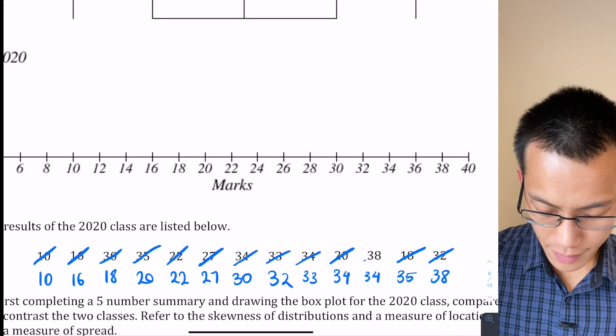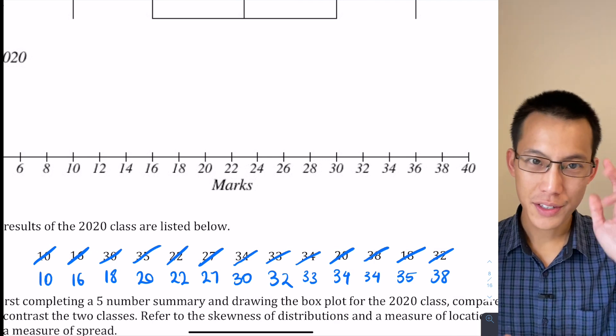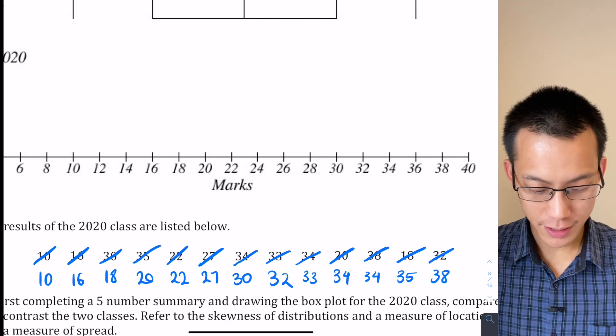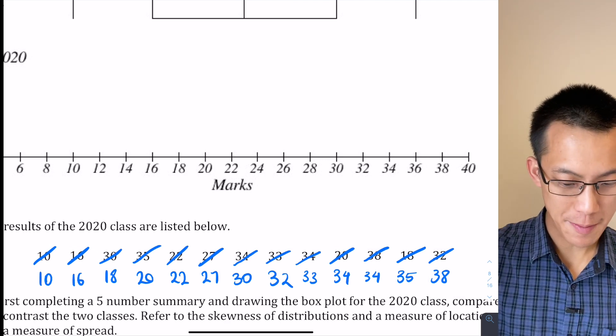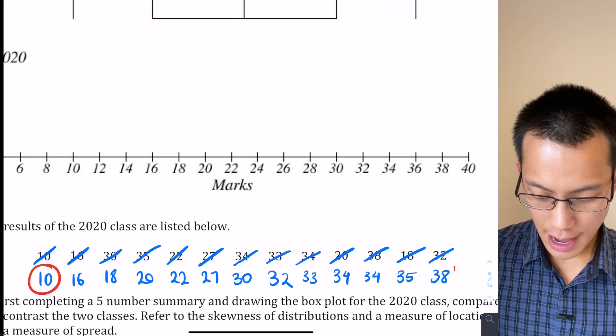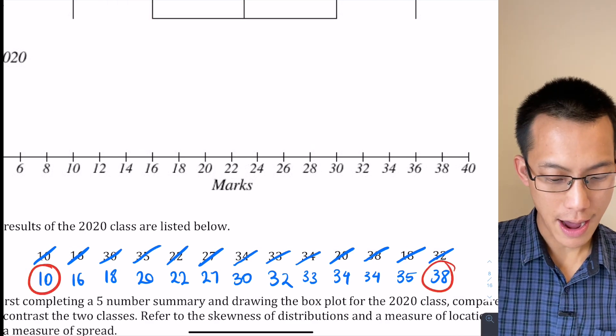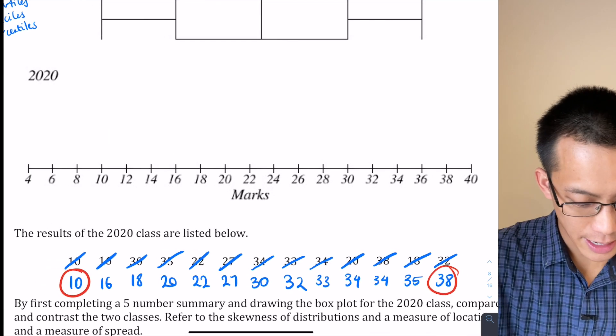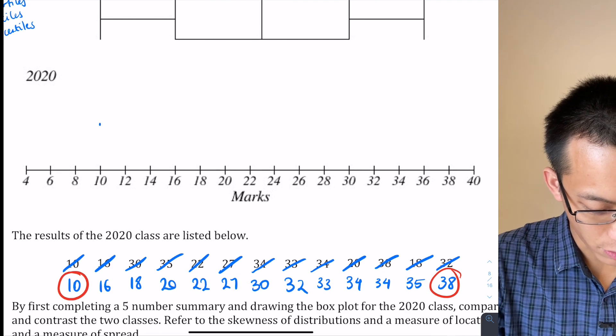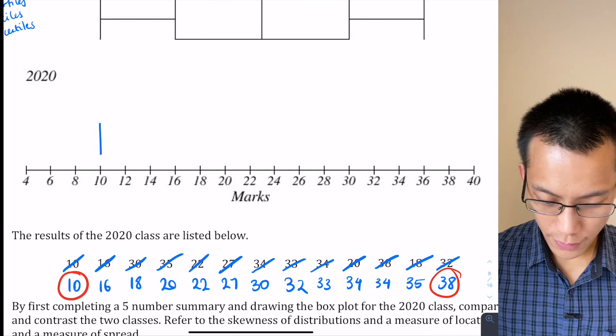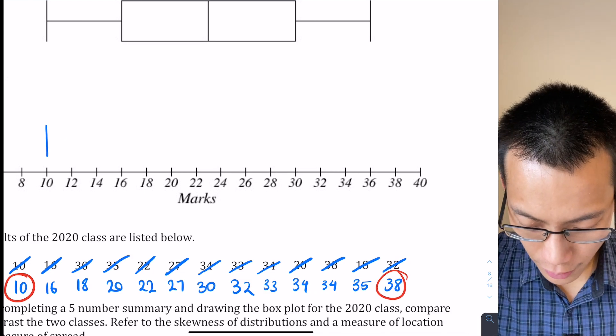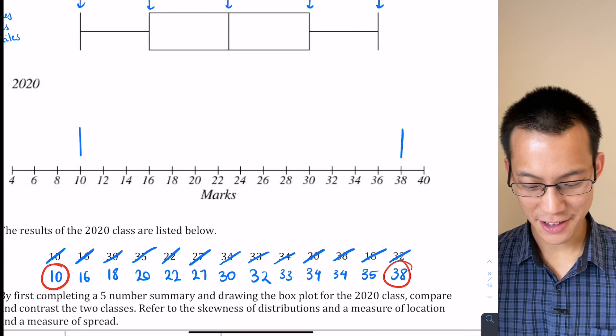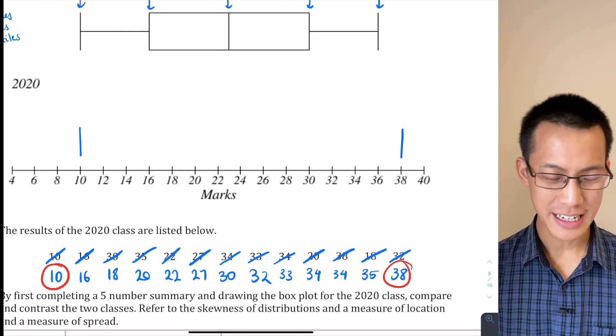Okay, so what have I got here? Well for starters, I can already read off the first, the lowest score, and the highest score immediately. You can see that's going to be 10 for the lowest and 38 for the highest. So when I go up to my new box plot up here, I'm going to find where 10 is, draw a vertical line like so, and then go over to 38 and draw another vertical line over there.